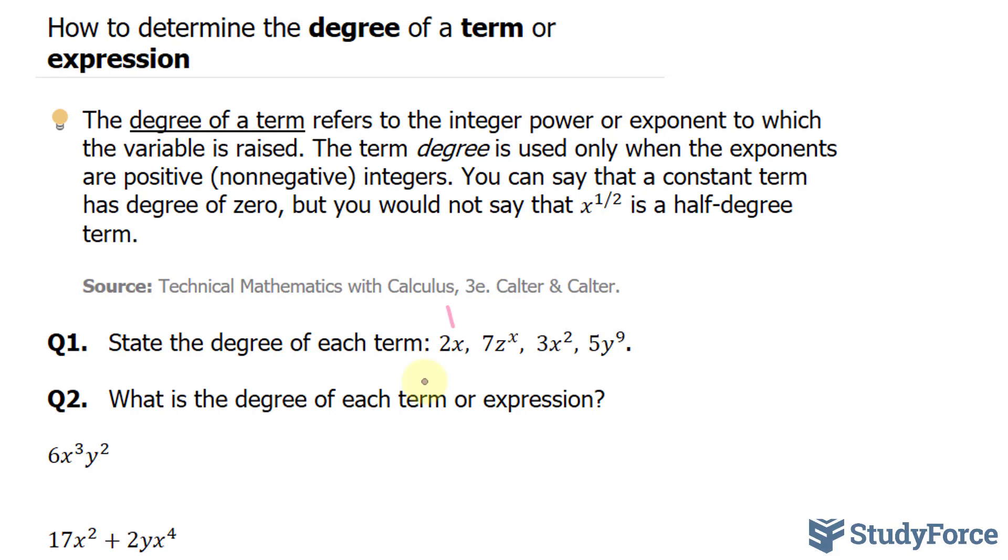Next, we have 7z to the power of x. This one's interesting because the exponent itself contains a variable. Therefore, this one has a degree of x.